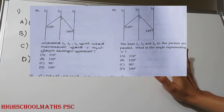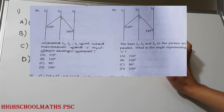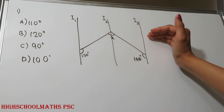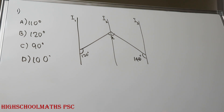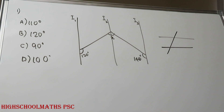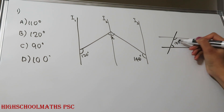I1, I2, I3 — the IA value is equal to x. Four options are given. In the figure, I1, I2, I3 are equal to x, and the lines in the picture are parallel. What is the angle representing x? Here we have two parallel lines — samanthara rekha — and this is a transversal. The angle on the side is the same angle. This is a total of 80 degrees.